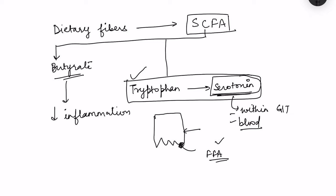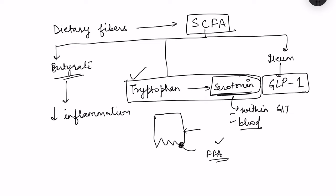The GI tract is responsible for 95% of serotonin production, which is important for regulation of GI secretion and motility. Additionally, short chain fatty acids act on L cells of the ileum, causing release of GLP-1. This gut microbiome activity also influences glucose homeostasis because GLP-1 enters the bloodstream and stimulates insulin secretion, decreasing blood glucose levels.